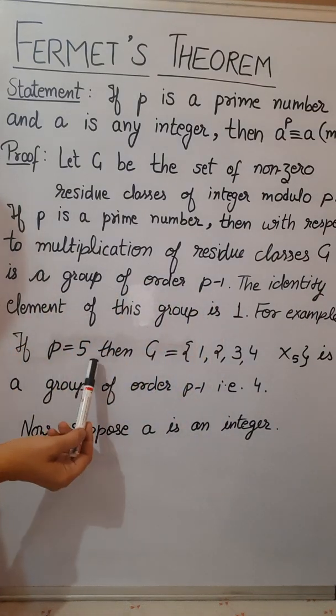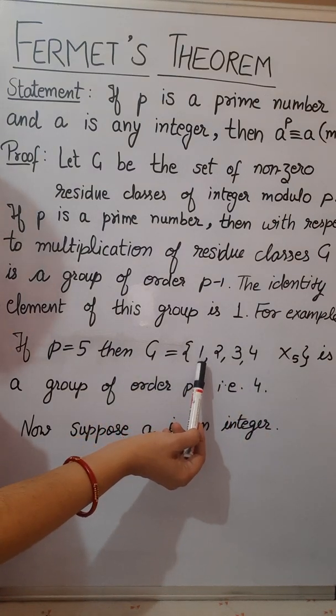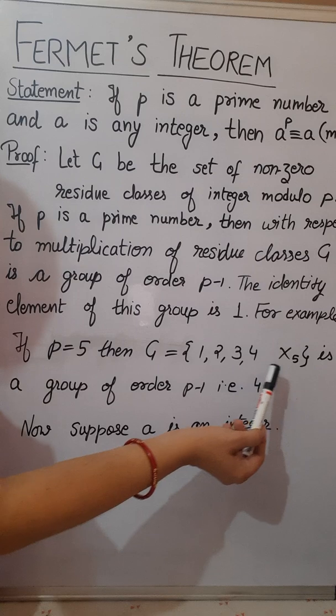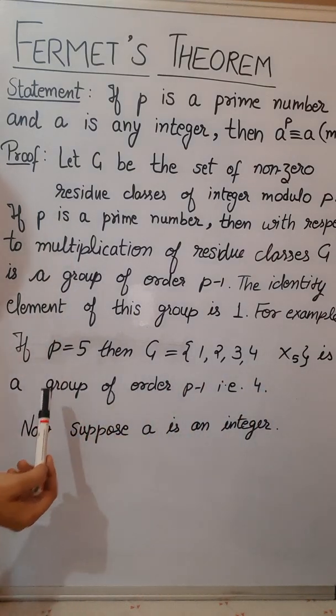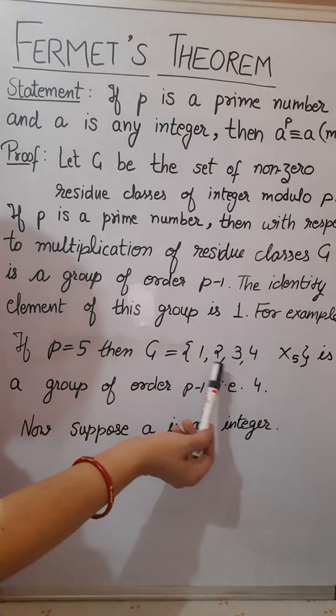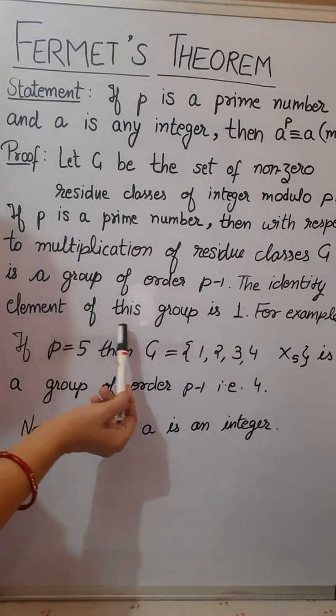For example if p is equals to 5 then G is equals to set of residue classes that is 1, 2, 3, 4. With respect to multiplication modulo 5 it forms a multiplicative group of order 4 that is p minus 1. The identity element of this group is 1.